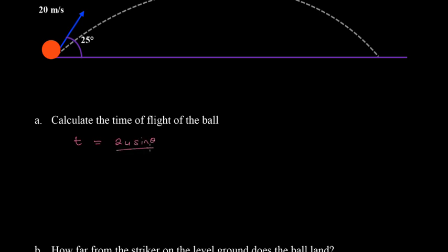Let's make a note of some values. u is equal to 20 meters per second, the angle θ is 25 degrees, and we know that g is 9.8 meters per second squared.